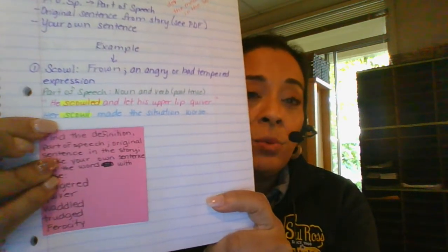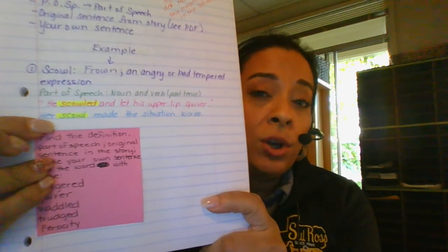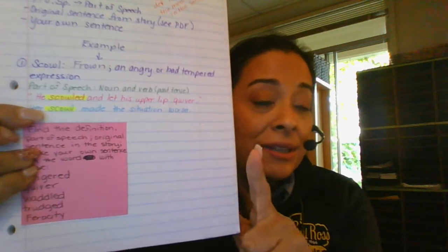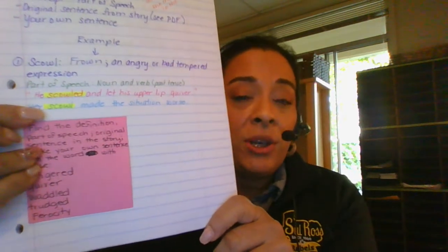Then the second one, the last one, I want you to make a sentence with that word the way it's used in the story. Her scowl, and I'm using it as a noun, made the situation worse.